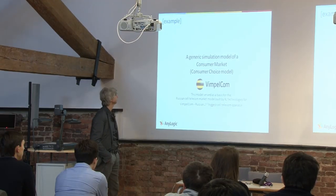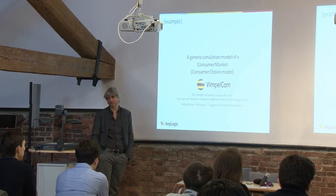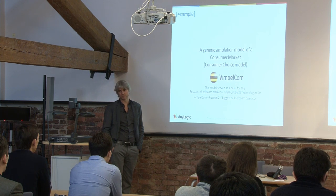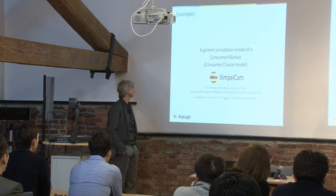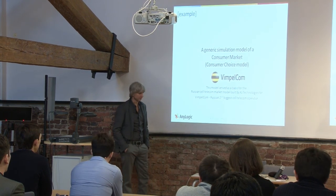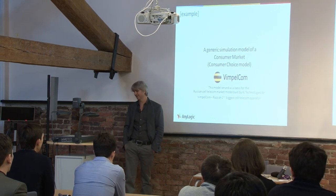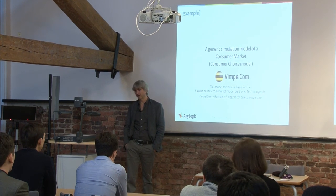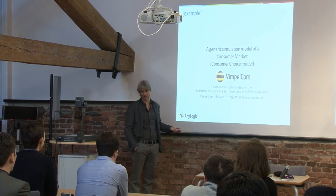One of our clients years ago was Wimple.com, the trademark B-line, and the model was a market of cell telephone users. I won't show you the real model because it's the property of Wimple.com, but I'll show you a sketch done before that as a kind of proof of concept — a simple model that was later used in a lot of consumer market models like this.